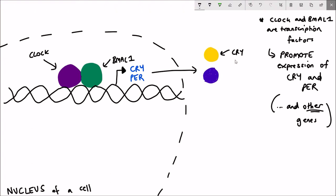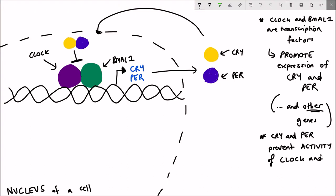CRY and PER go into the cytosol to get translated into protein, and it's their protein products that then go back into the nucleus. They act to repress the activity of CLOCK and BMAL1.